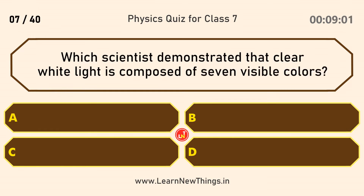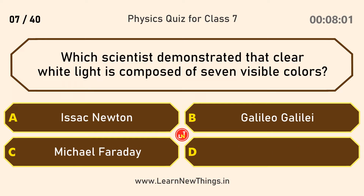Which scientist demonstrated that clear white light is composed of seven visible colors? Isaac Newton.